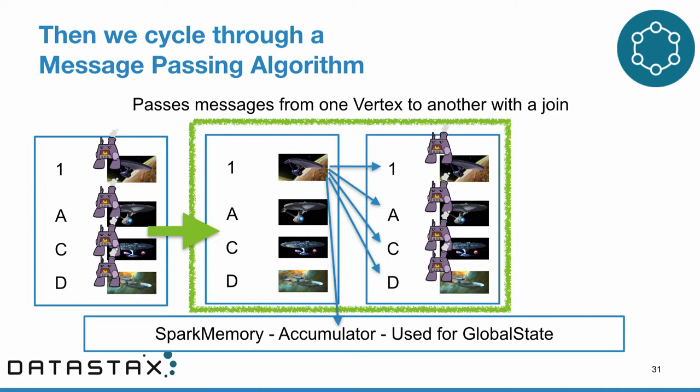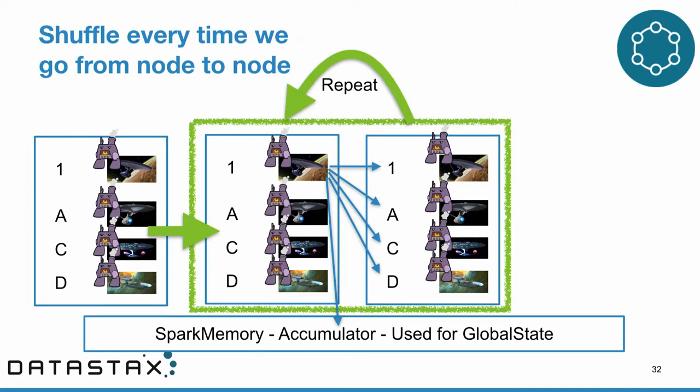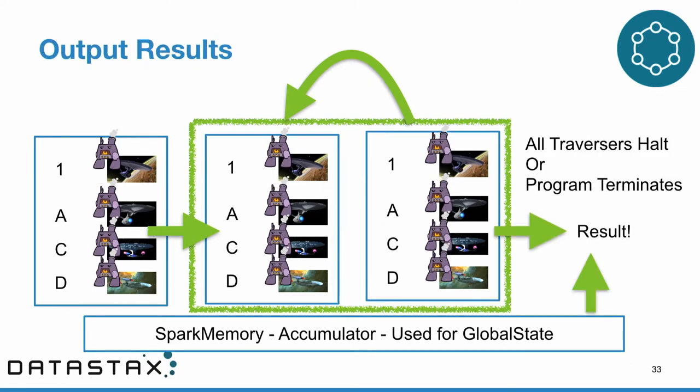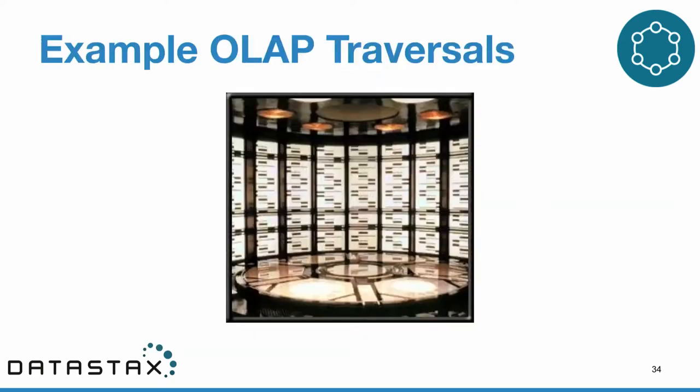We end up with partitioned data where we start a traverser on every single vertex, and whenever we want to move from one vertex to another we perform a shuffle step, moving traversers to the new vertices they land on. Many graph algorithms have this pattern — start on one vertex, move to another, repeat several times before returning a result. We repeat that shuffle every time, and eventually the traversers halt and we return a result. The cool thing is you don't have to know any of this — you use the same Gremlin traversal language and the execution engine handles it.